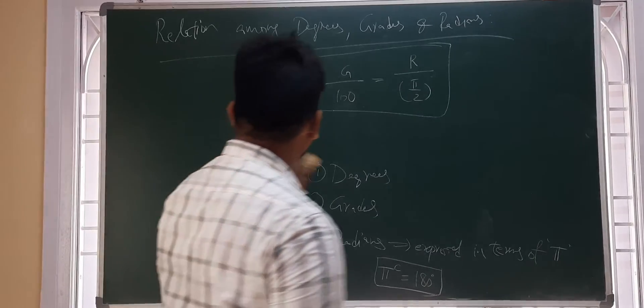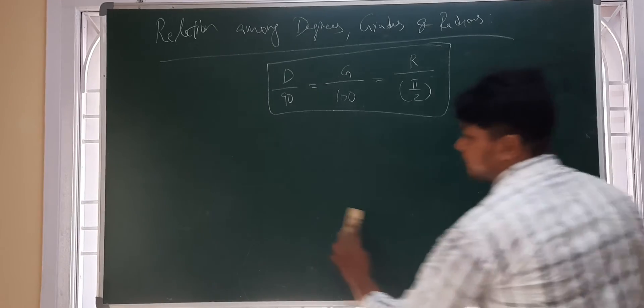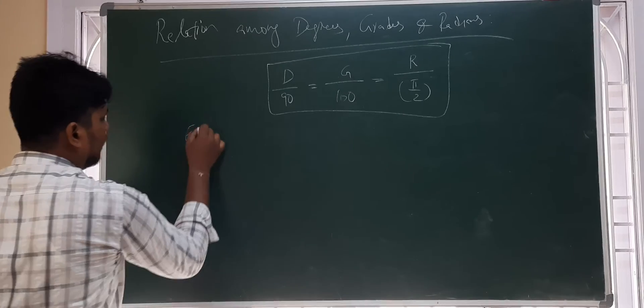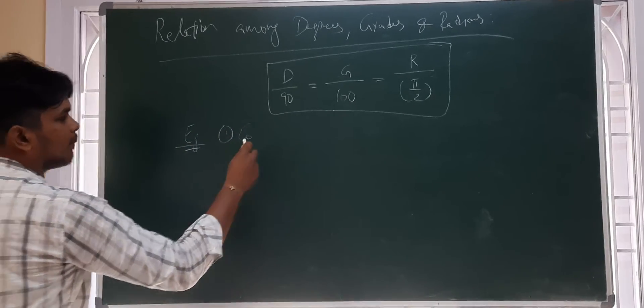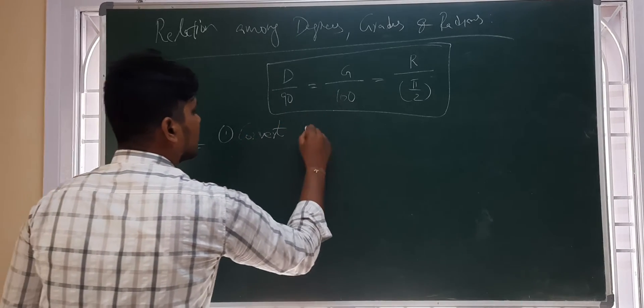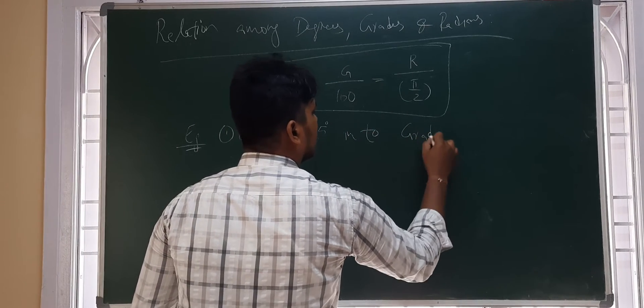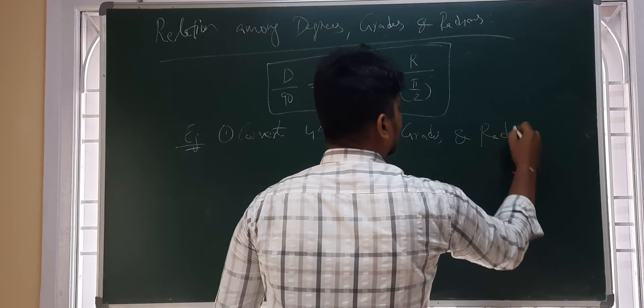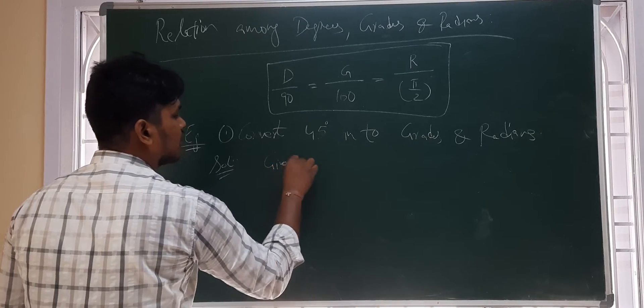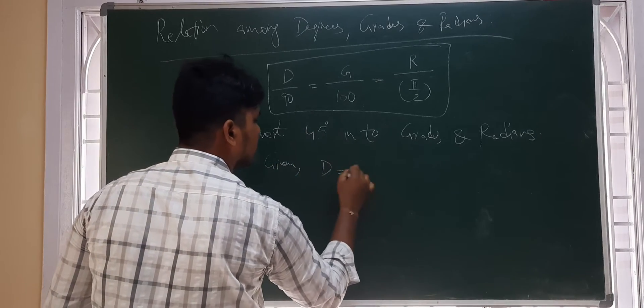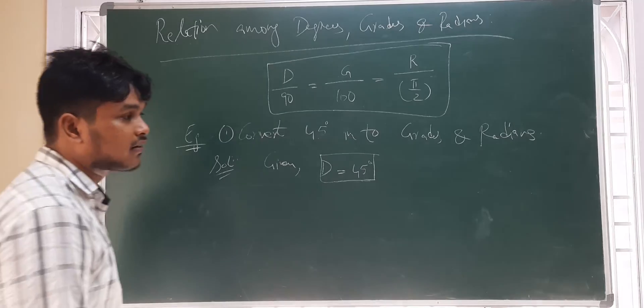Now, let us suppose if I want to convert degrees into grades or degrees into radians, how do I do? Firstly, let me discuss a small example. Convert 45 degrees into grades and radians. What is given in the question? D is equal to 45 degrees. Now, how can I convert these degrees into grades and radians?